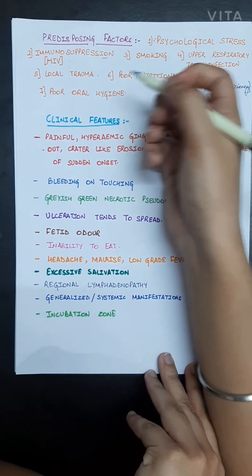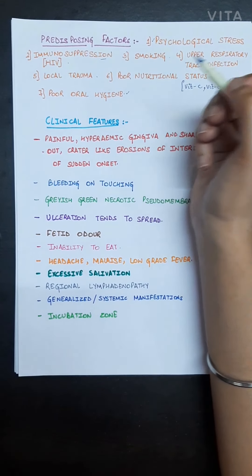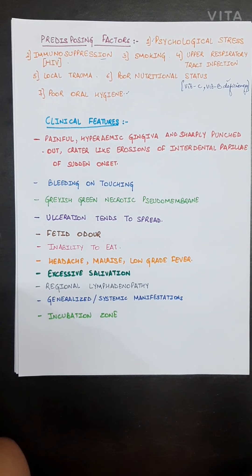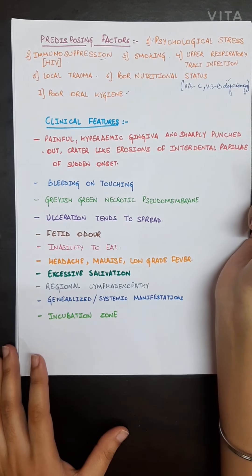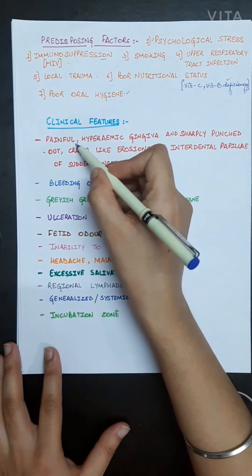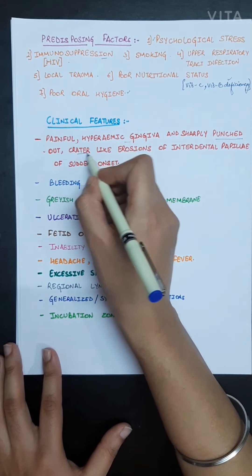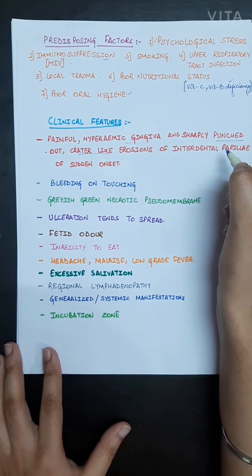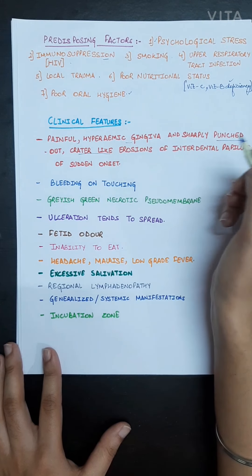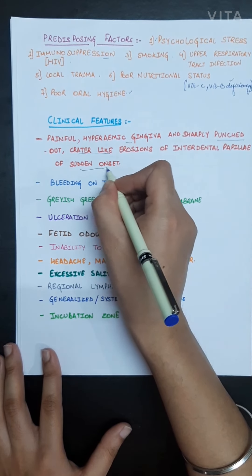Now the clinical features of ANUG: basically it is painful hyperemic gingiva and sharply punched out crater-like erosions of interdental papilla, and it is of sudden onset.